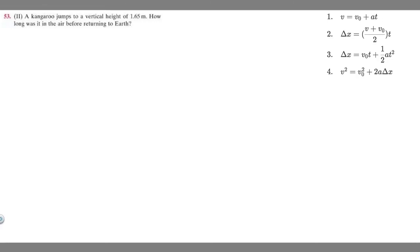So in this problem we're told a kangaroo jumps to a vertical height of 1.65 meters and then we're asked to find how long it was in the air before returning to earth.